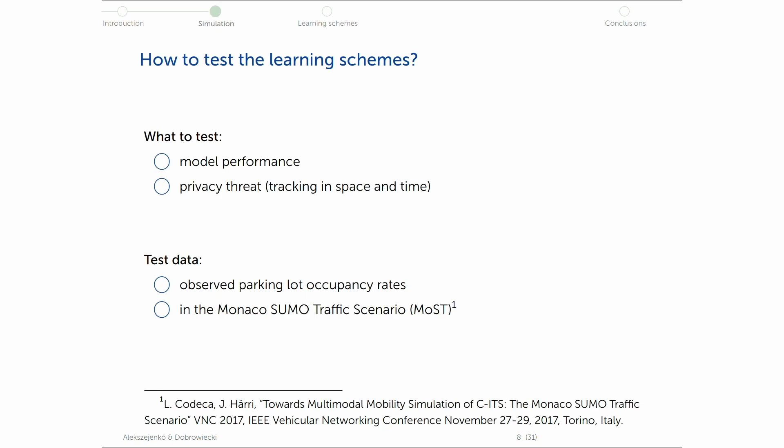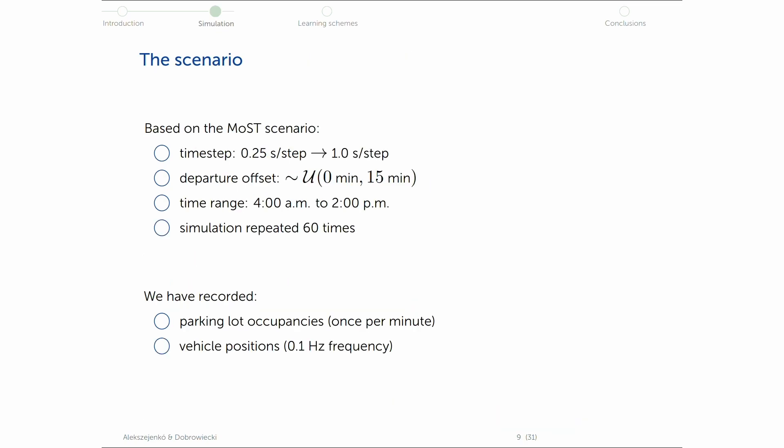To be short, it's just MOST. And we recorded the parking lot occupancy rates during this scenario. So to make it run a little bit faster, we modified the time step of the basic MOST scenario, which you can also pull from GitHub, and applied some departure offset to have something randomized.